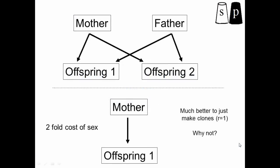In this third video about levels of selection, we'll be thinking about sexual reproduction. First, let's think about how sexual reproduction works in diploid species. You have a female and a male, and they produce offspring. This offspring has a genetic contribution from the mother and a genetic contribution from the father.